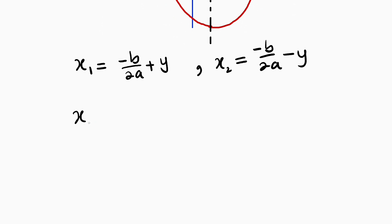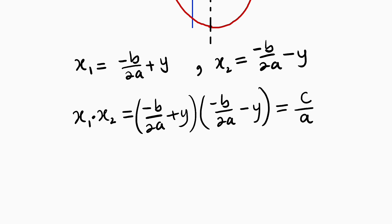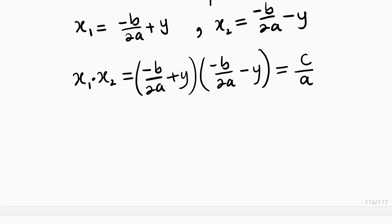So x1 — the first root — multiplied by x2, the second root, equals negative b divided by 2a plus y, multiplied by negative b divided by 2a minus y, and this equals c divided by a. This is just a difference of two squares, which is simple to expand.